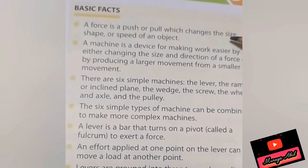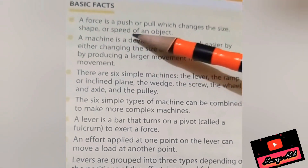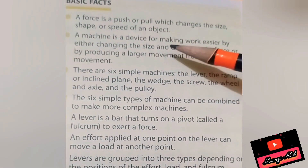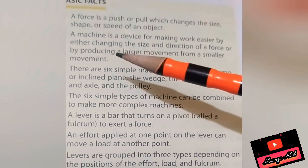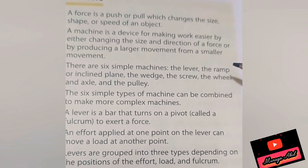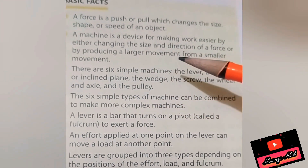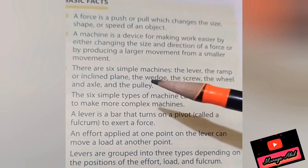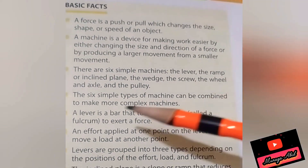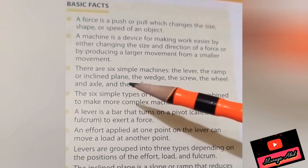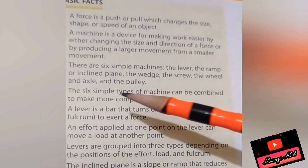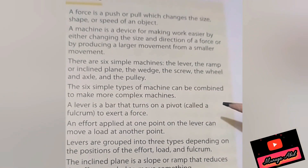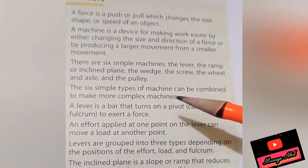A force is a push or pull which changes the size, shape, or speed of an object. A machine is a device for making work easier by either changing the size and direction of a force, or by producing a large movement from a smaller movement. There are six simple machines: the lever, the ramp or inclined plane, the wedge, the screw, the wheel and axle, and the pulley. These six simple machines can be combined to make more complex machines.